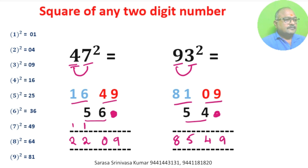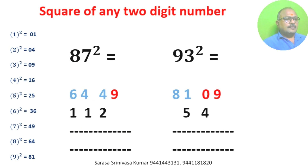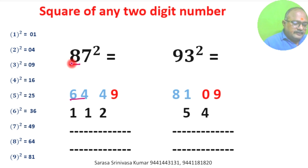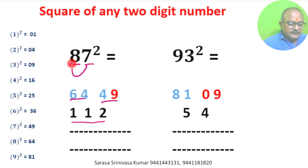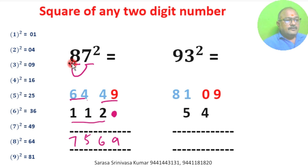87 square: square of 8 is 64, square of 7 is 49. 7 times 8 is 56, double it — 112. We don't write anything in units place. 9, 4 plus 1 is 5, 6 plus 1 is 7. Square of 87 is 7569.